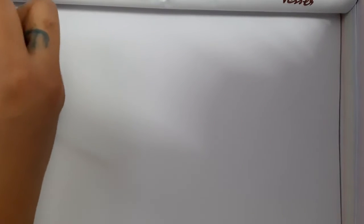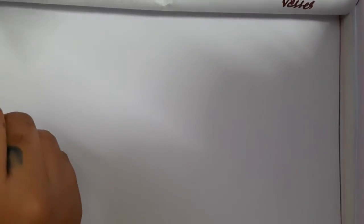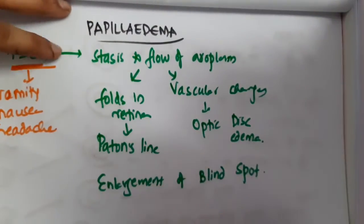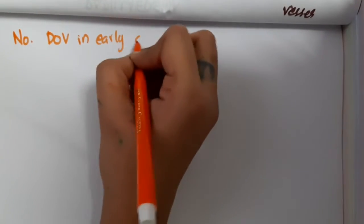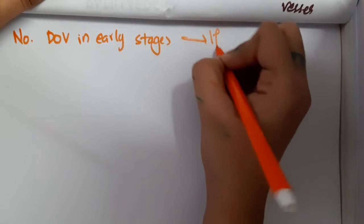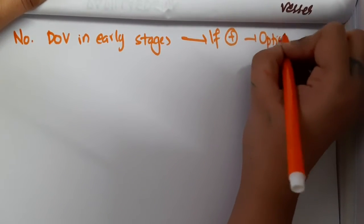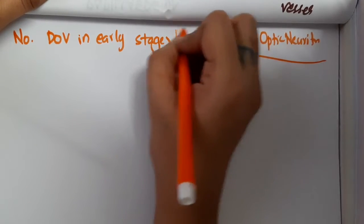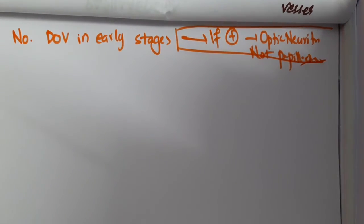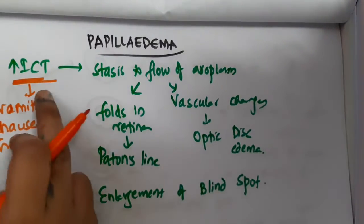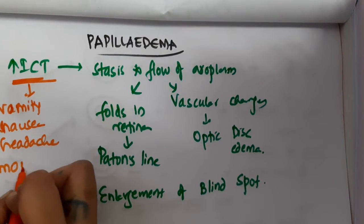Now looking at the clinical features: number one, optic disc edema will be seen. Because there is no involvement of visual change, there is no diminution of vision in early stages — diminution of vision is only seen in late stages. If it is present in early stages, think of optic neuritis, not papilledema. There will also be symptoms of nausea, vomiting, and headache due to increased intracranial pressure.